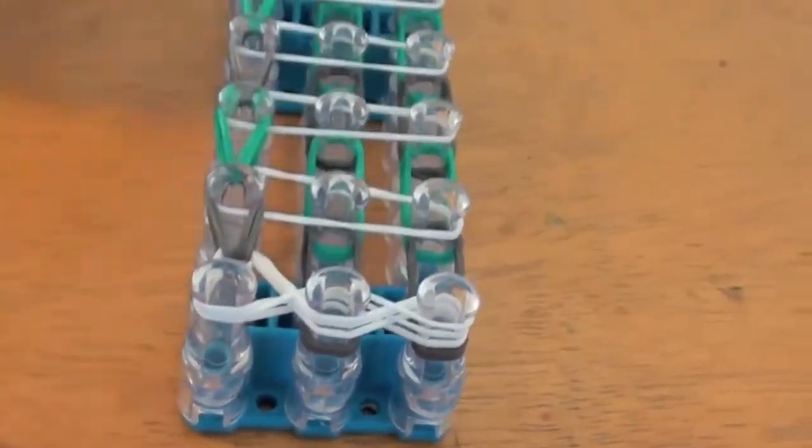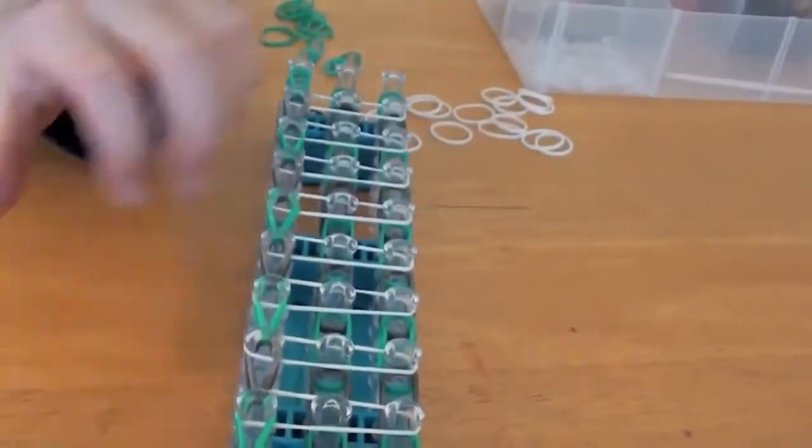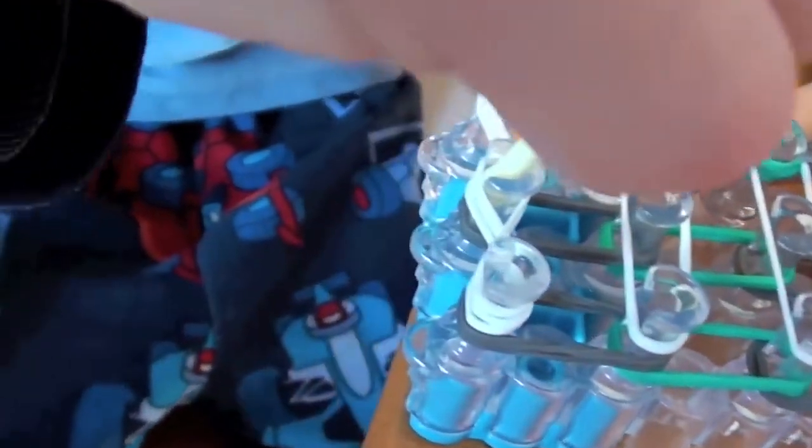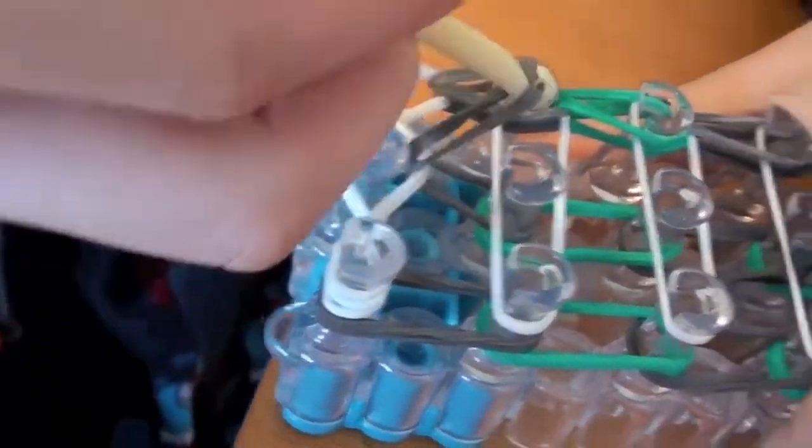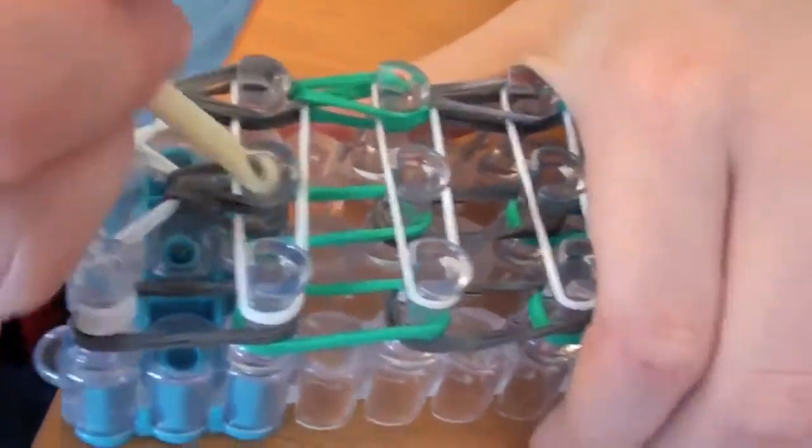So now you want to do this on these two rows. Go under the three little white bands, grab the gray ones and push them over to this.